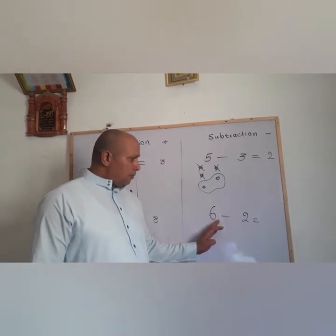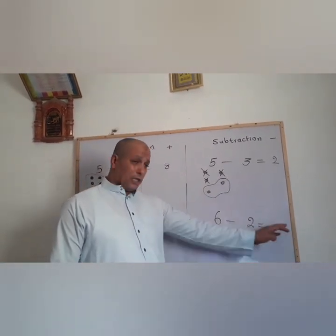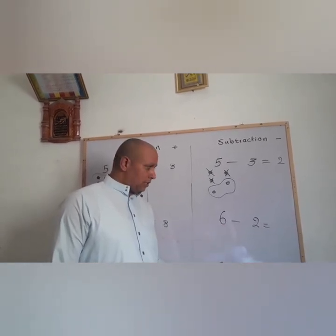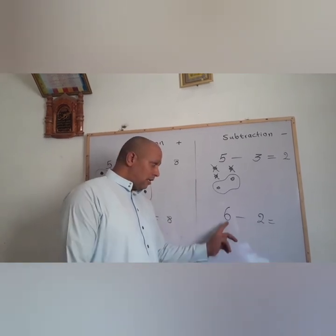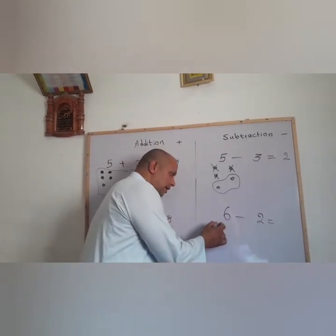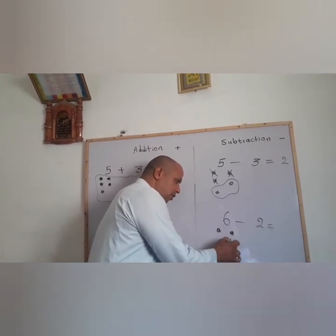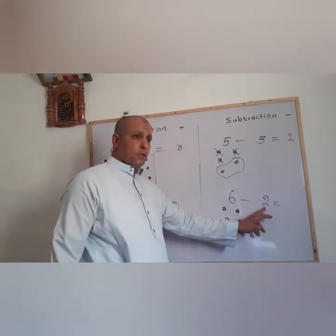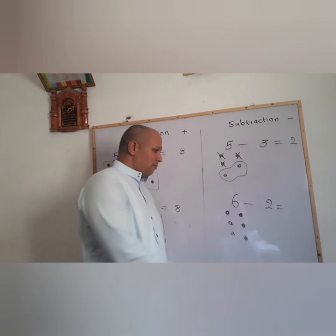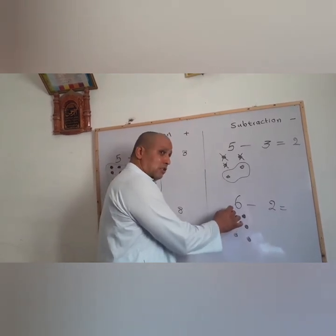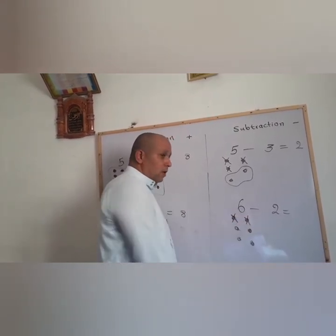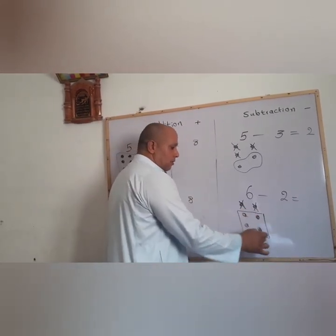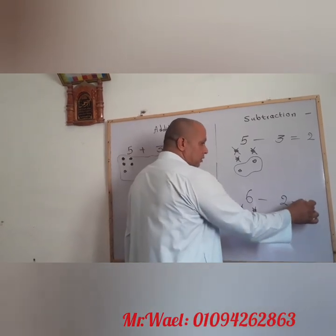For the second problem, you need to do the same in order to get the right answer. Put 6 counters here and 2 X signs here. Let's put the counters for the first number: 1, 2, 3, 4, 5, and 6. For the second number — no counters here, but X signs: 2 X signs, 1 and 2. Now just count the remaining ones: 1, 2, 3, 4. So your answer here will be 4.